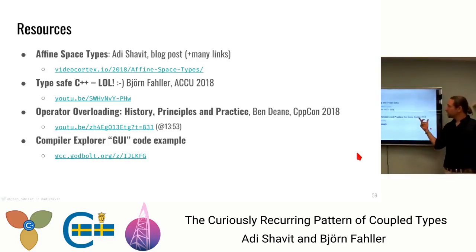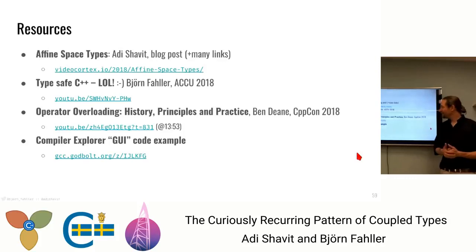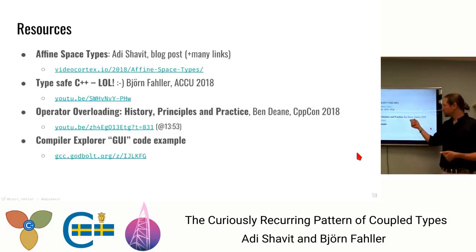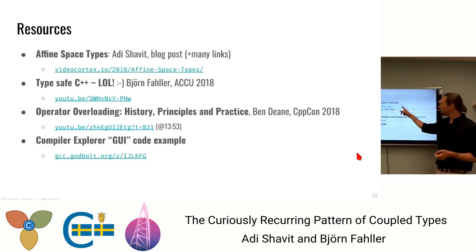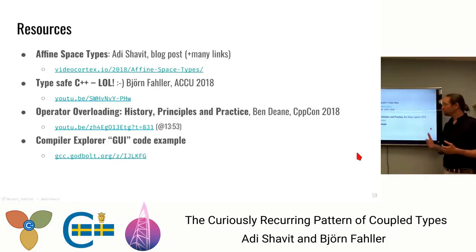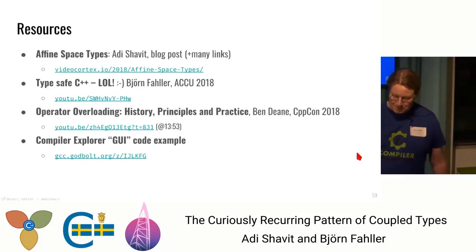We collected a few resources: Adi wrote a blog post about affine space types at the beginning of the year, and Bjorn did his typesafe C++ talk at around the same time — that's what got them chatting on Slack and eventually led to this talk. Ben Dean did a talk at CppCon called 'Operator Overloading: History, Principles and Practices' and mentions affine types briefly around 30 minutes in. Bjorn's example is here, and the blog post has additional links to references.